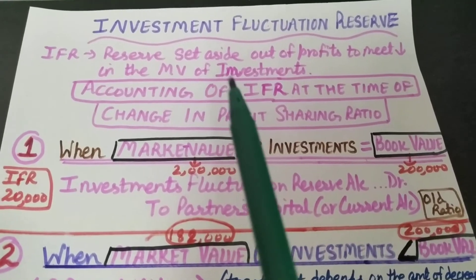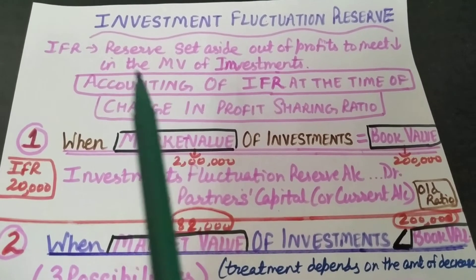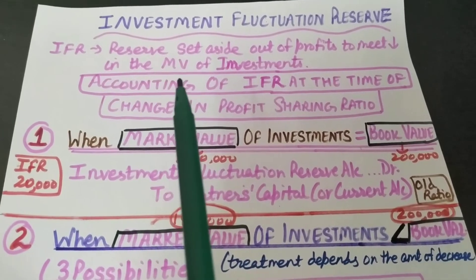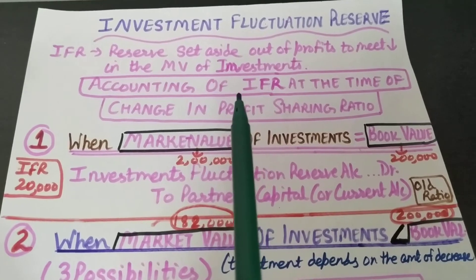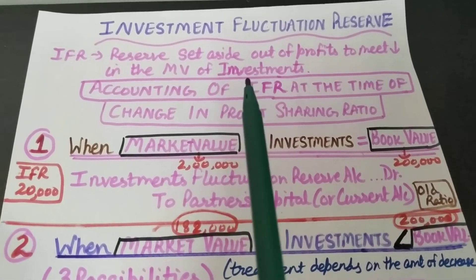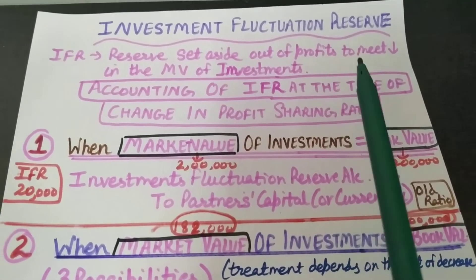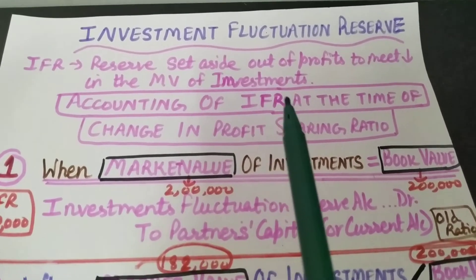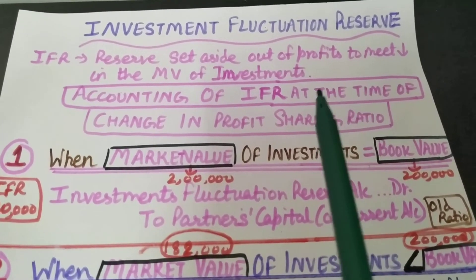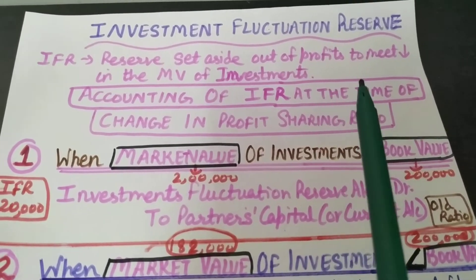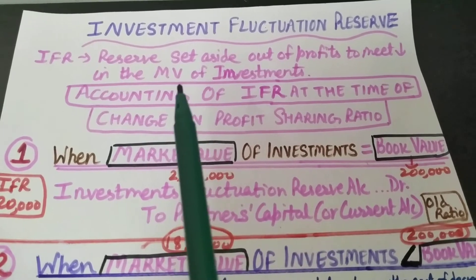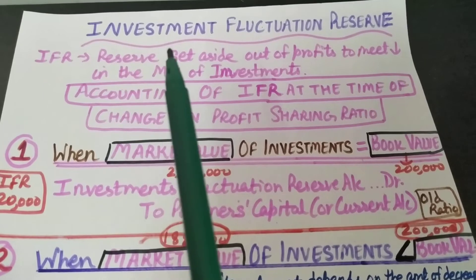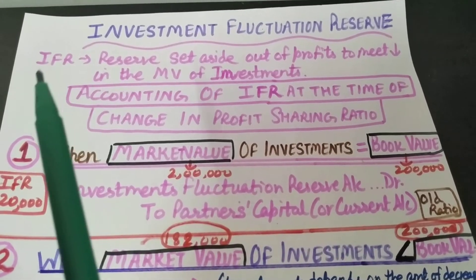To be on the safer side, firms create an Investment Fluctuation Reserve to overcome the fall in market value of their investments. This reserve is set aside out of profits to meet the fall in market value. This reserve is named Investment Fluctuation Reserve, or IFR.